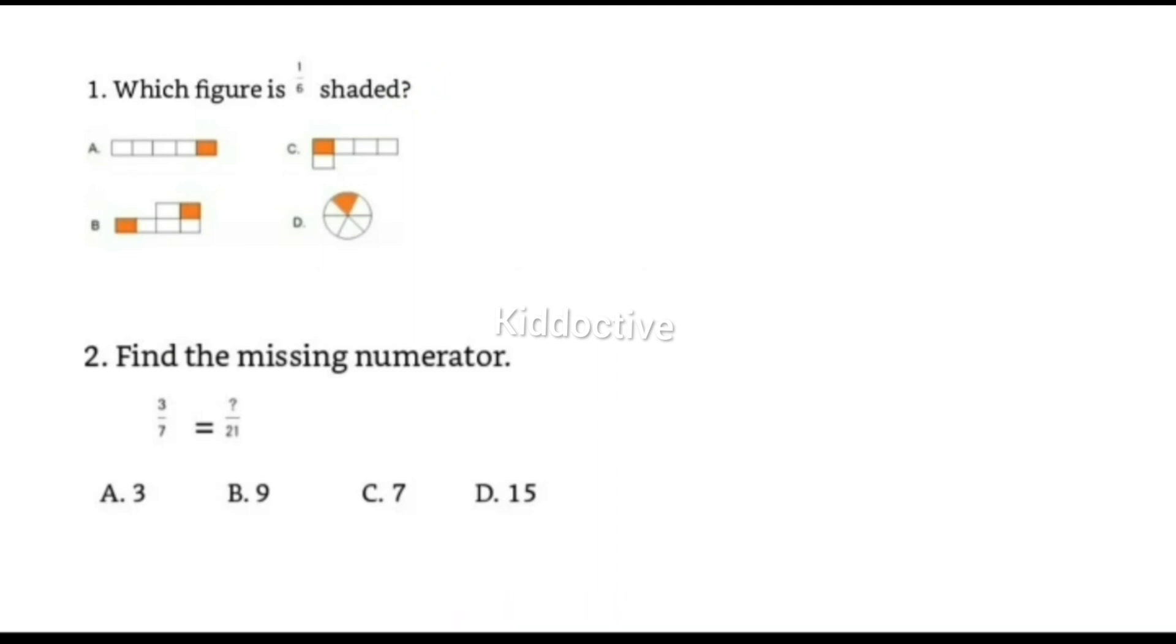are going to see which figure has six parts. One, two, three, four, five - this is five. One, two, three, four, five - this is again five. One, two, three, four, five, six - but two parts are shaded, so no. One, two, three, four, five, six - so this one is one-sixth shaded. Now coming...